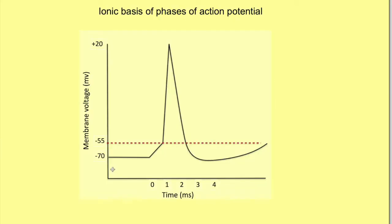This diagram shows the phases of action potential. On the x-axis you see time in milliseconds — whenever we are seeing the action potential it is very important to note the time. The y-axis is membrane voltage in millivolts. The starting point is RMP, resting membrane potential, shown as minus 70 millivolts.